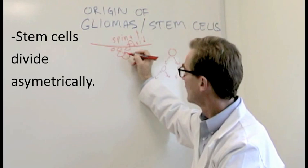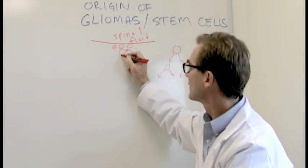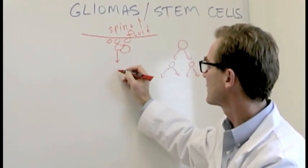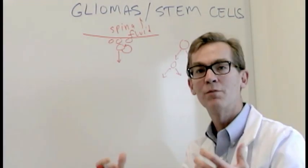One cell divides and remains a stem cell. And then a daughter cell divides. And then these cells can divide and become more mature cells.